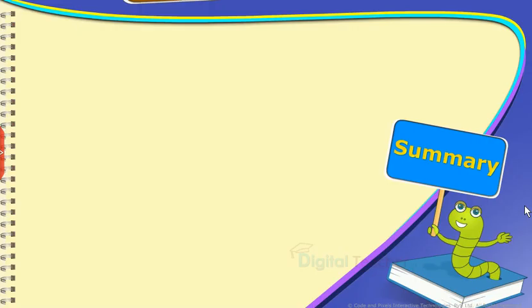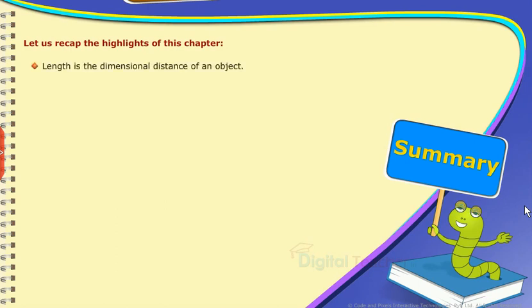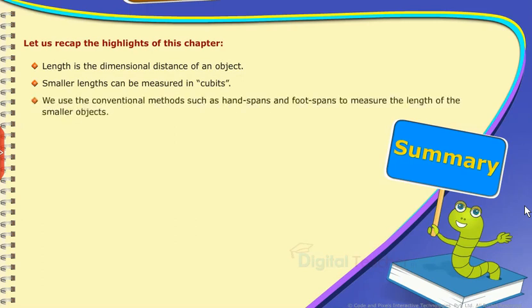Summary: Let us recap the highlights of this chapter. Length is the dimensional distance of an object. Smaller lengths can be measured in cubits. We use conventional methods such as hand spans and foot spans to measure the length of smaller objects.